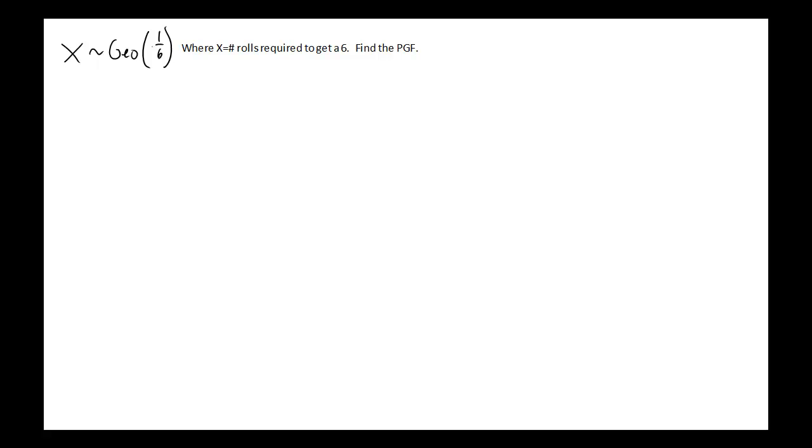So if we think about this, the probability that it will take zero rolls to get a six is zero, because if you don't roll it, you can't get a six. Okay, the probability that it will take one roll to get a six is simply one over six, because if I roll it once, there's a one out of six chance that I'll get a six.